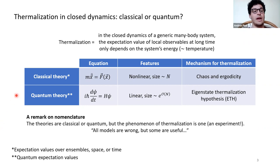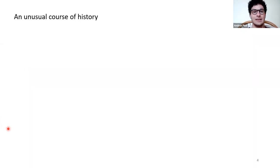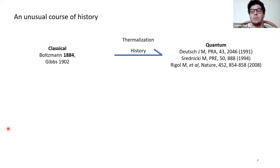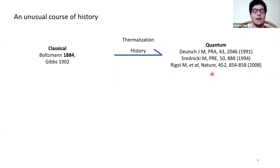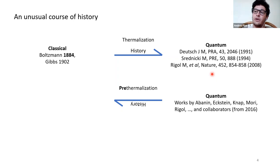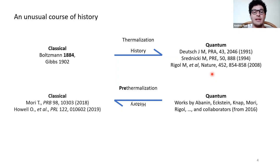The history of thermalization starts from the classical setting — much older and easier — done already more than a century ago. Only much later did the quantum approach come. Curiously, the converse is true for pre-thermalization: here, the quantum approach was used first, and then the classical one — surprising, because the classical setting is easier.